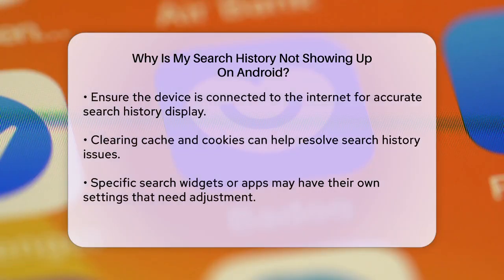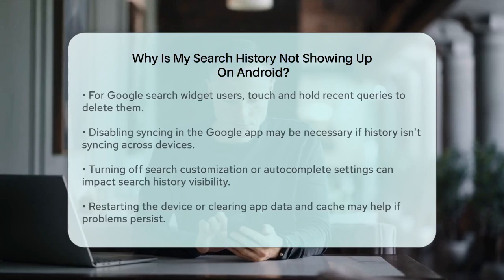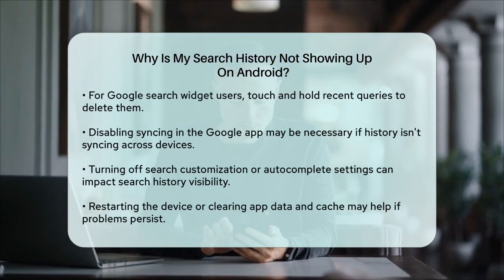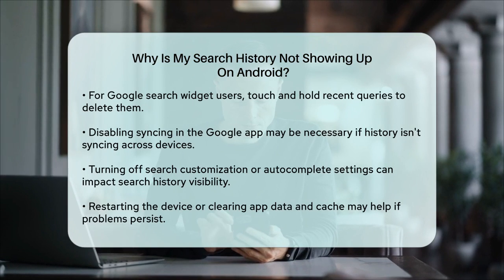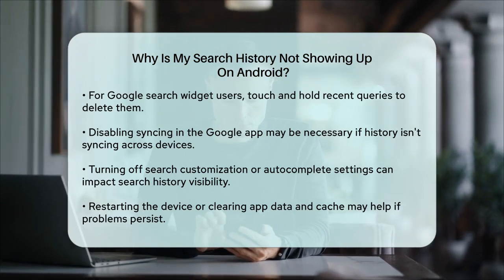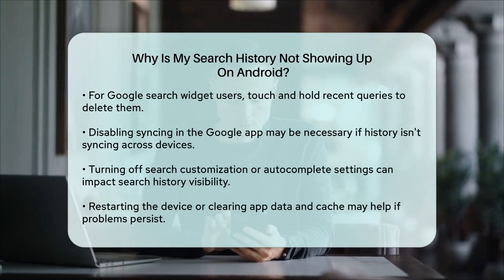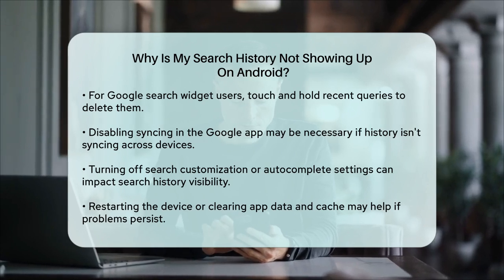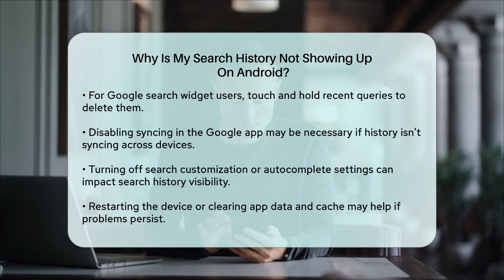Lastly, if you've turned off Search Customization or Autocomplete settings, this could also affect what appears in your search history. Make sure these settings are enabled if you want to see your recent searches. For instance, in the Brave browser, you might need to toggle off Autocomplete Searches and URL to manage how your search history appears.